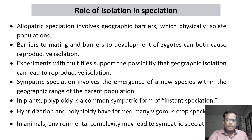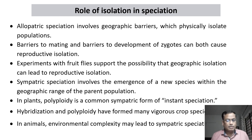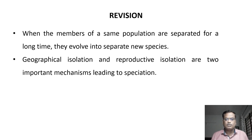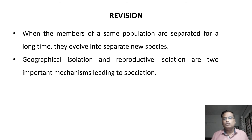In animals, environmental complexity may lead to sympatric speciation. There are many environmental factors which result in reproductive isolation in animals, ultimately leading to speciation. So in brief, the two important isolating mechanisms are geographical barriers and reproductive barriers, and both lead to speciation.